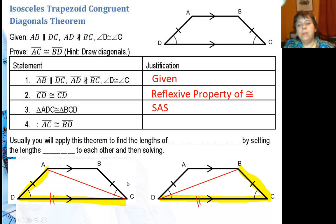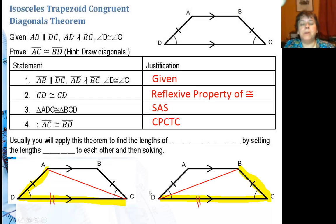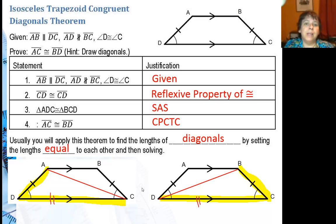So if I want to, I could say that this third side — the red side on both of these triangles — will be congruent by CPCTC, which says that the corresponding parts of congruent triangles are congruent. So usually you're going to apply this theorem to find the lengths of diagonals by setting the lengths equal to each other and solving. It's really pretty straightforward.